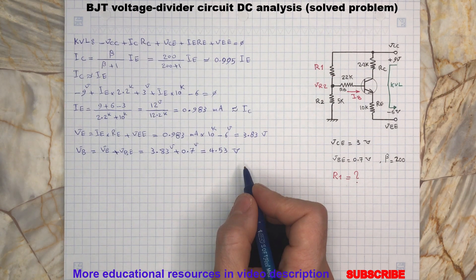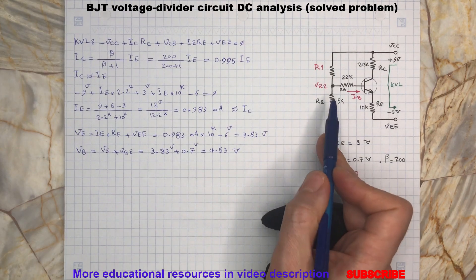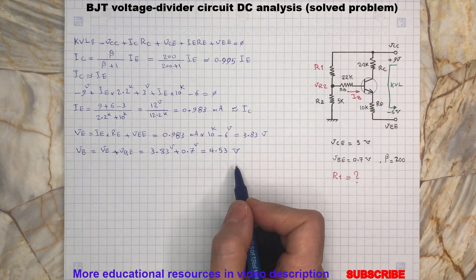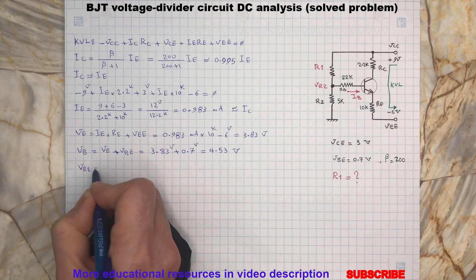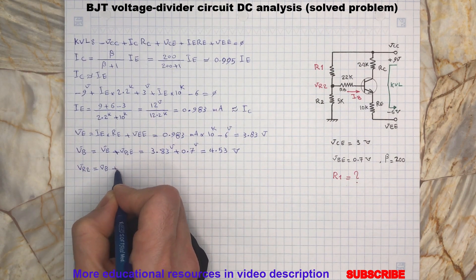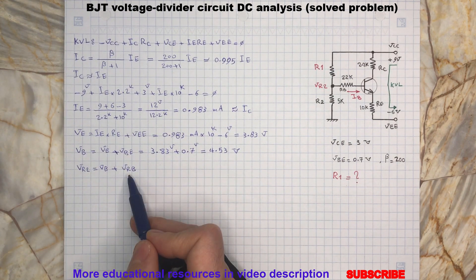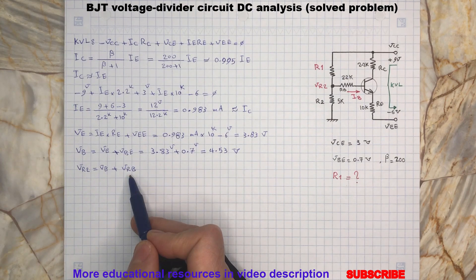Now back to the video and remember that the goal was to determine VR2. So we can write... and VRB is the voltage across RB.